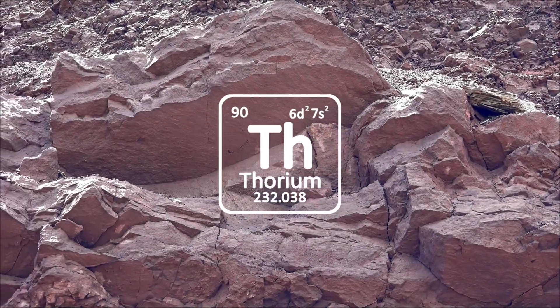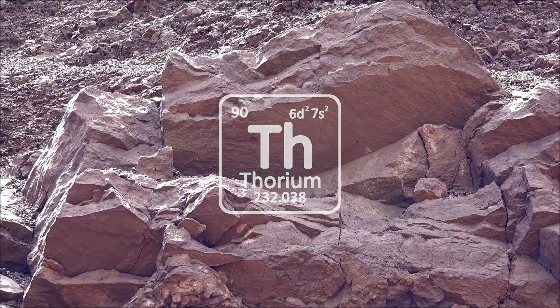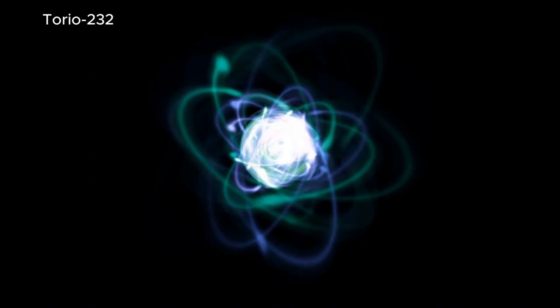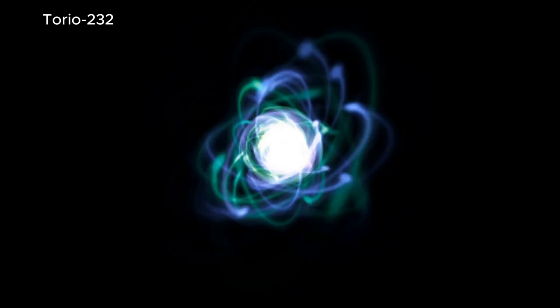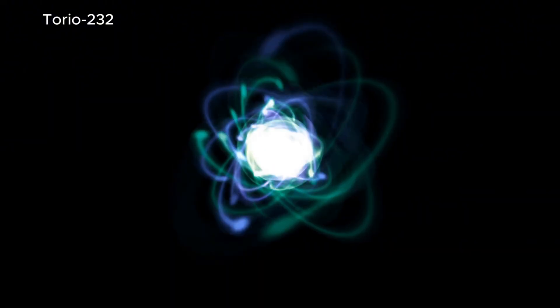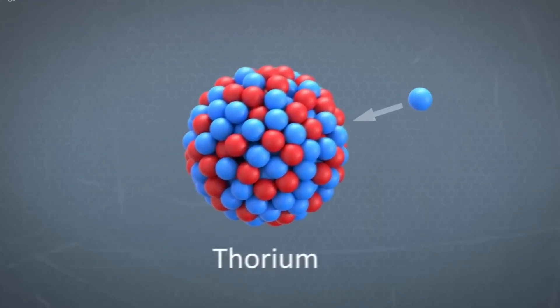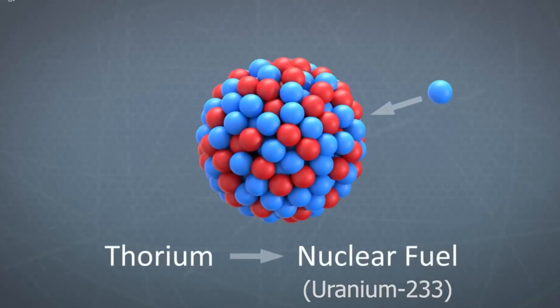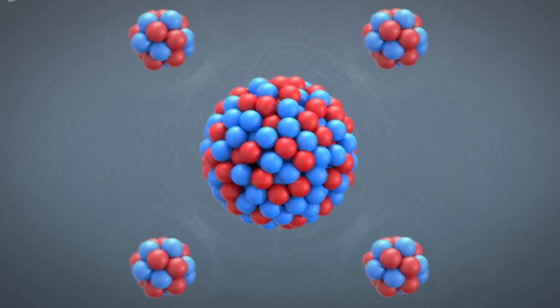Thorium is a fascinating element that challenges everything you thought you knew about nuclear fuel. Unlike uranium, thorium-232 is not fissile on its own, meaning it can't sustain a nuclear chain reaction directly. But here's the kicker. When you bombard thorium-232 with neutrons, it transforms into uranium-233, which is fissile and can sustain a controlled reaction.